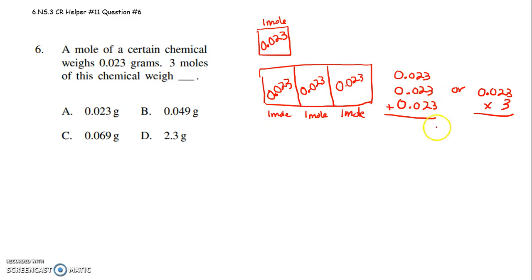3 plus 3 plus 3 is 9. 2 plus 2 plus 2 is 6. 0 plus 0, 0 is 0. 0 plus 0, 0 is 0.